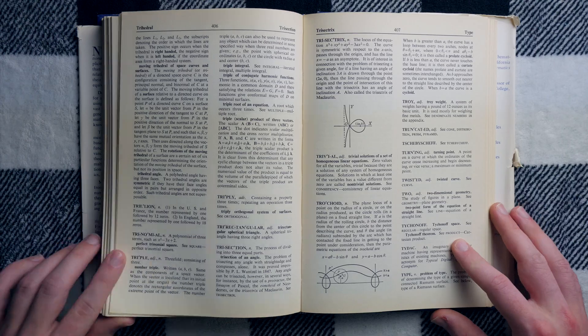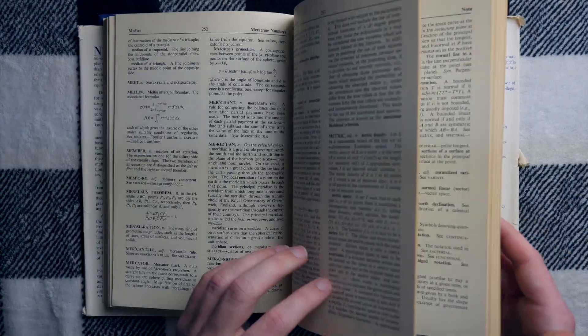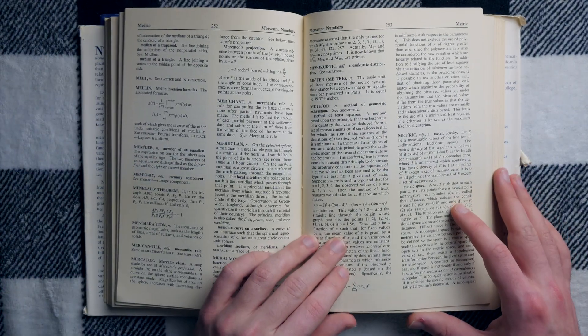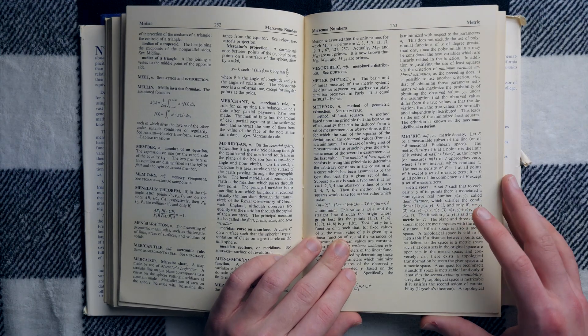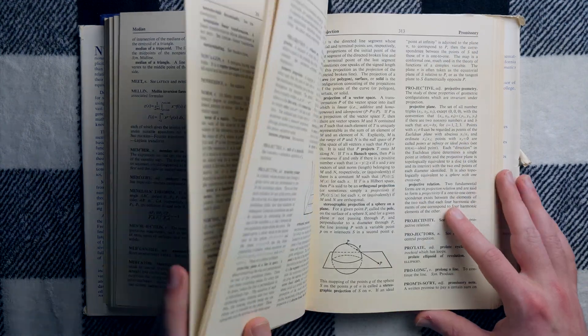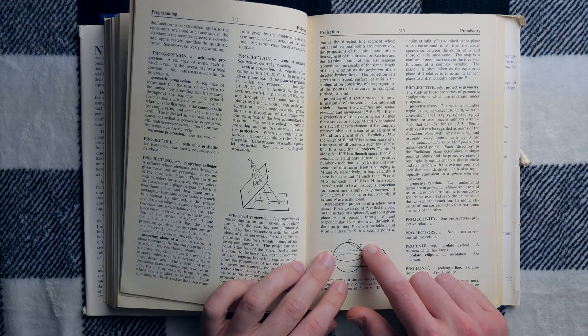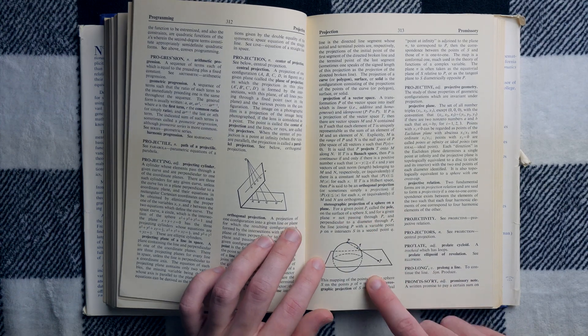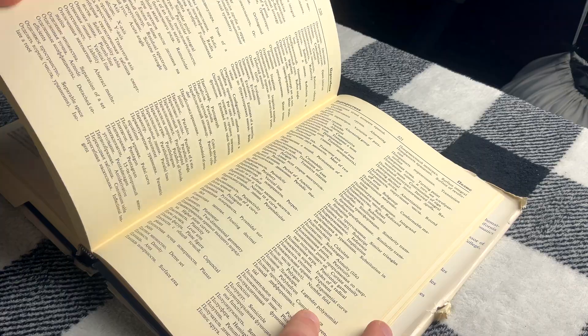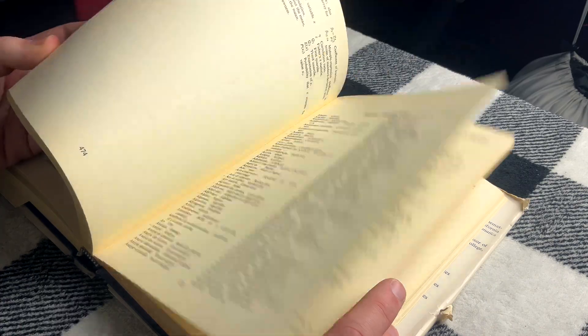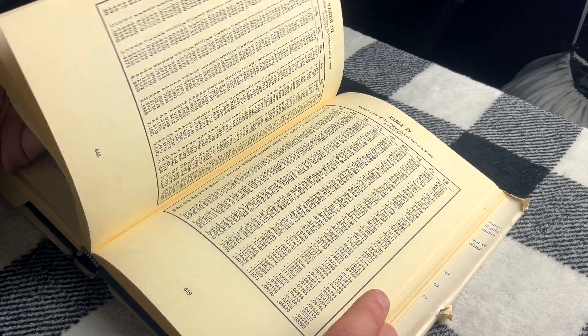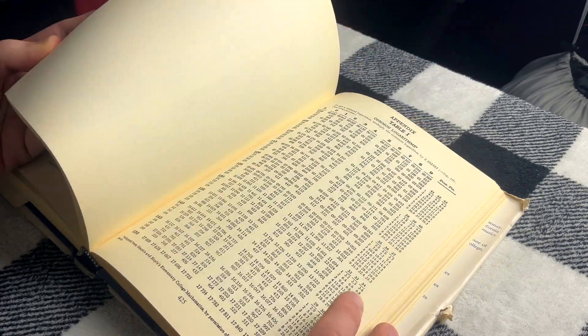But tons of good stuff in here. I mean, you could just flip to any random page and learn some cool new math. Maybe it's an outdated term, or maybe it's a still-in-use term that you've just never heard before. And lots of pictures, too. Stereographic projection of a sphere on a plane. I mean, a lot of cool stuff. Let's go to the back before we wrap up here. You can see all the cool tables they have in the back, here in the appendices.